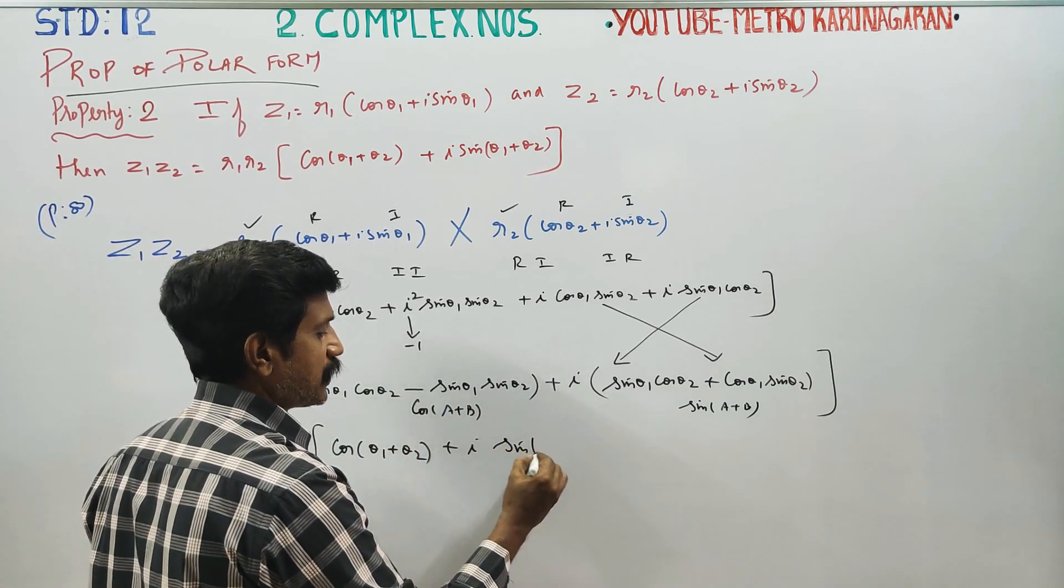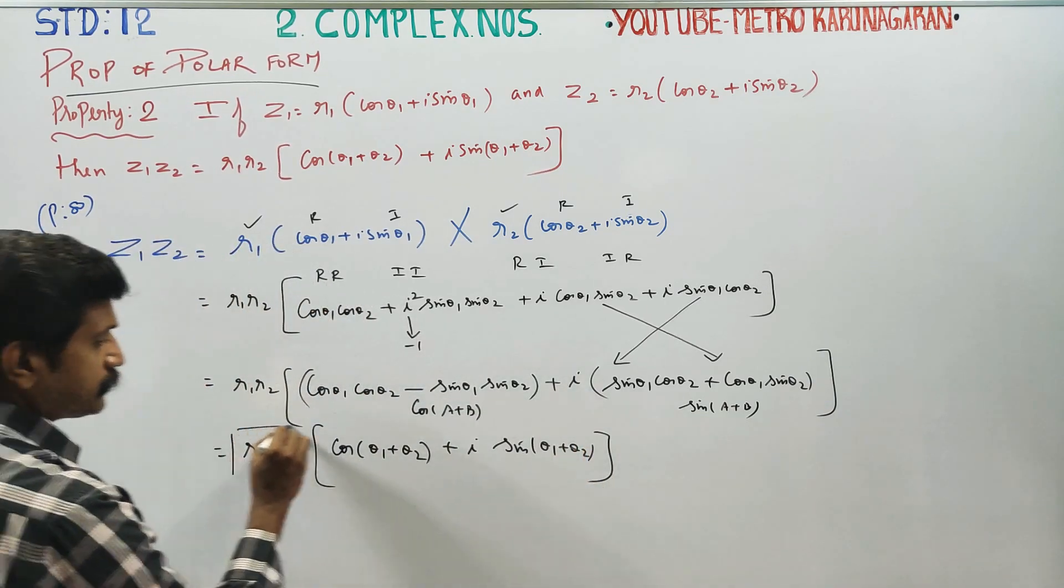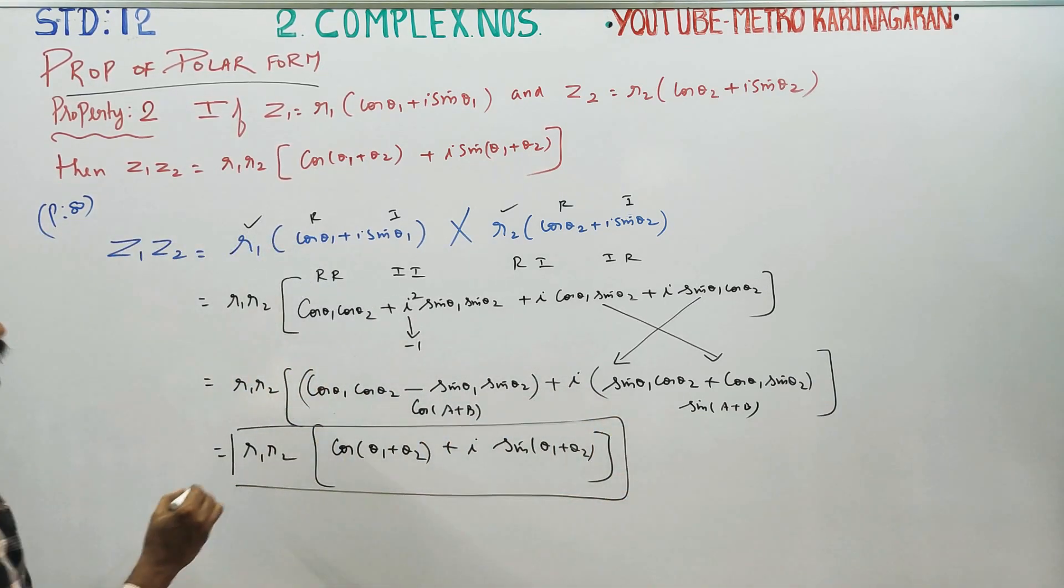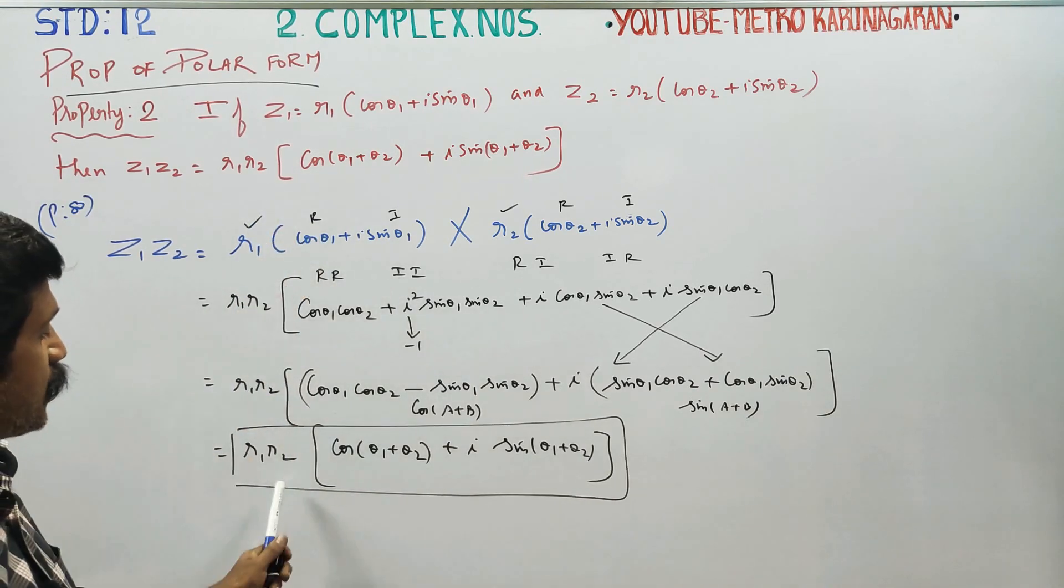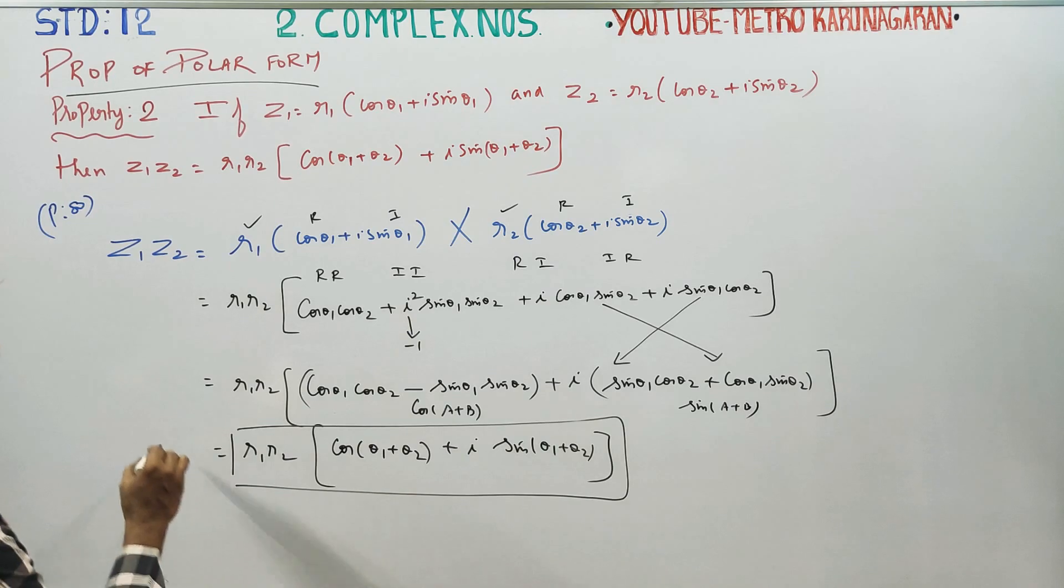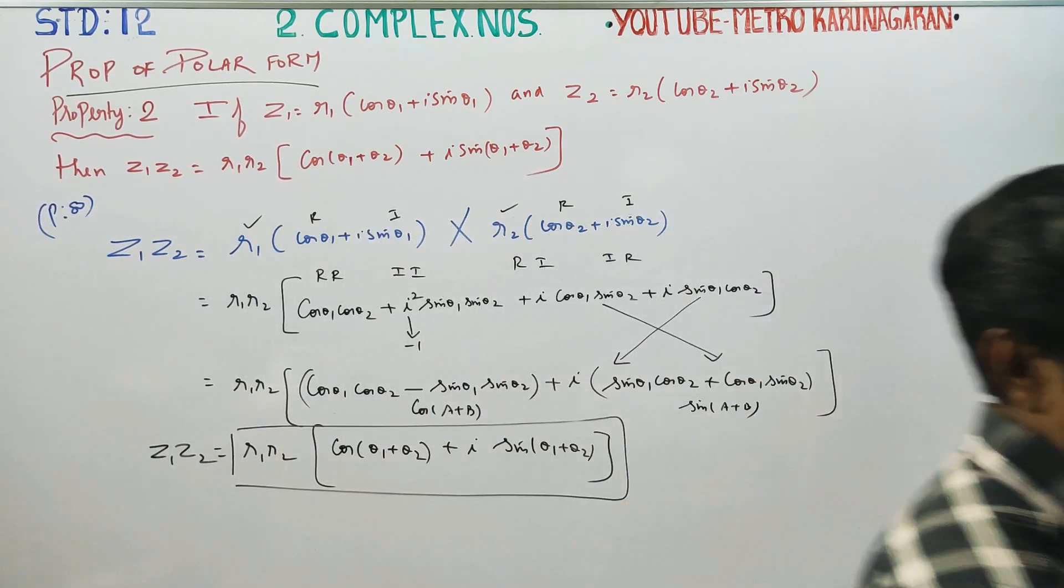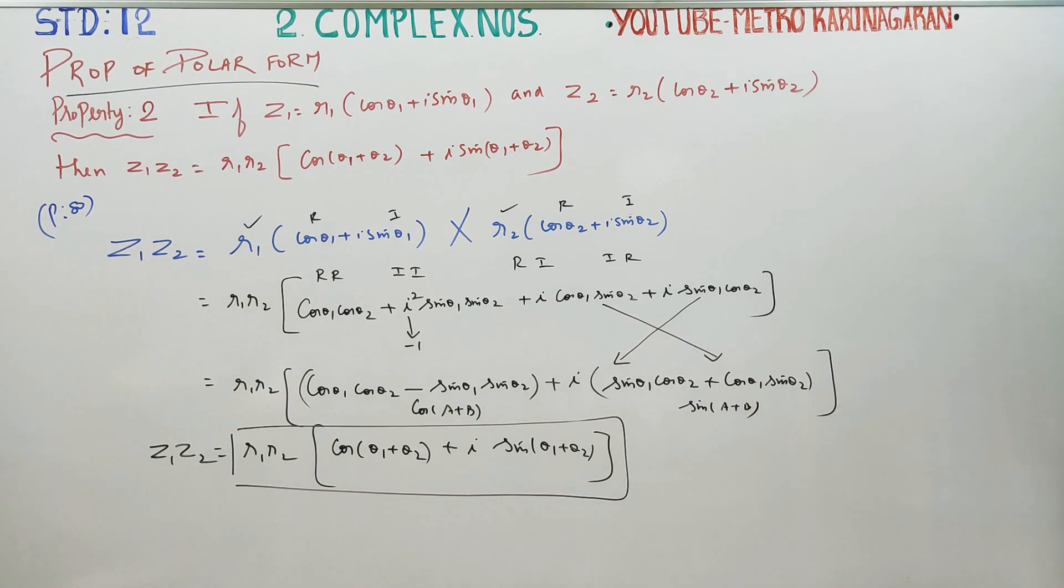Therefore, Z1 into Z2 equals R1 into R2, cos(θ1 + θ2) plus i sin(θ1 + θ2), is your final result. Hence we have proved this property. Thank you.